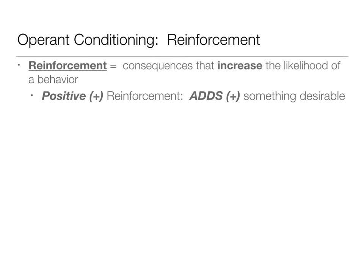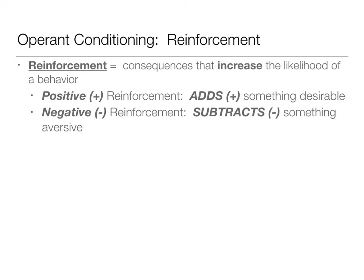Negative reinforcement involves removing something adverse. A perfect example is seat belts: the seat belt beeps at you until you plug it in, and you do it to make the sound stop — making you more likely to put your seat belt on next time because you don't want to hear the annoying noise. Both positive and negative reinforcement increase the likelihood of a behavior. Remember, something that's reinforcing to one person may not be reinforcing to another — if you don't like candy, candy won't be an effective reinforcement.